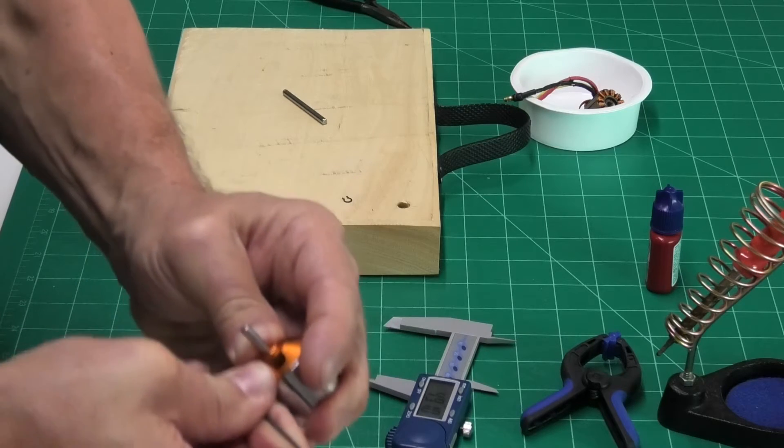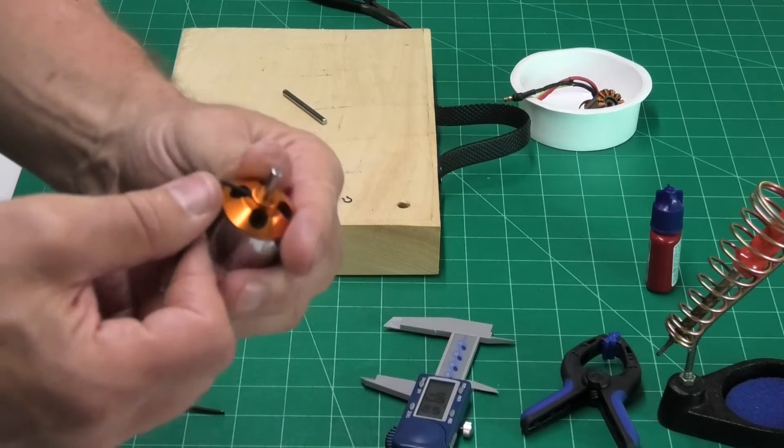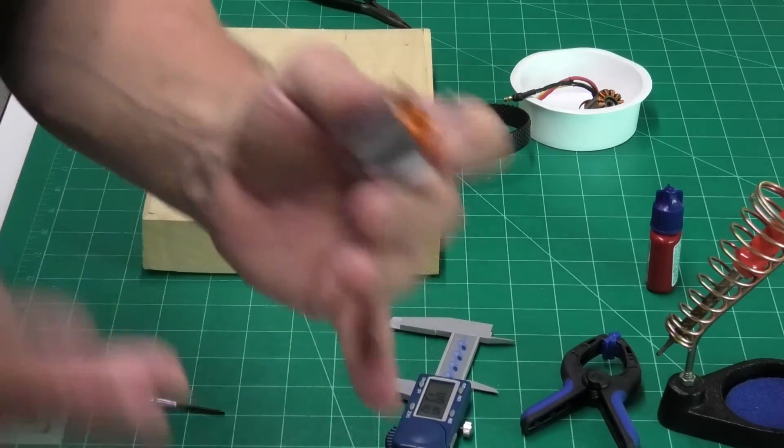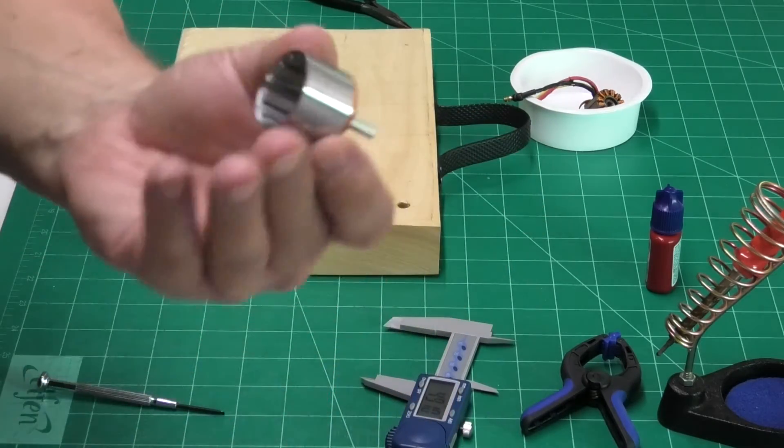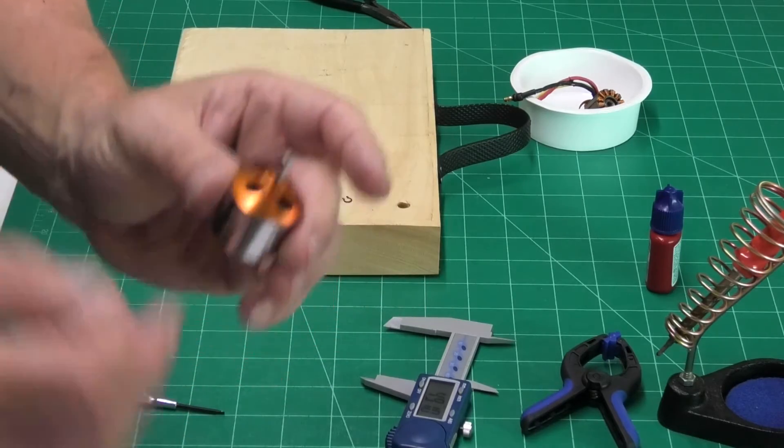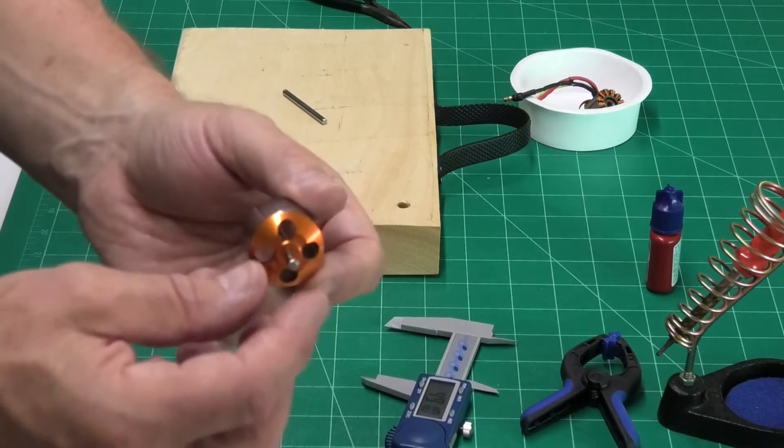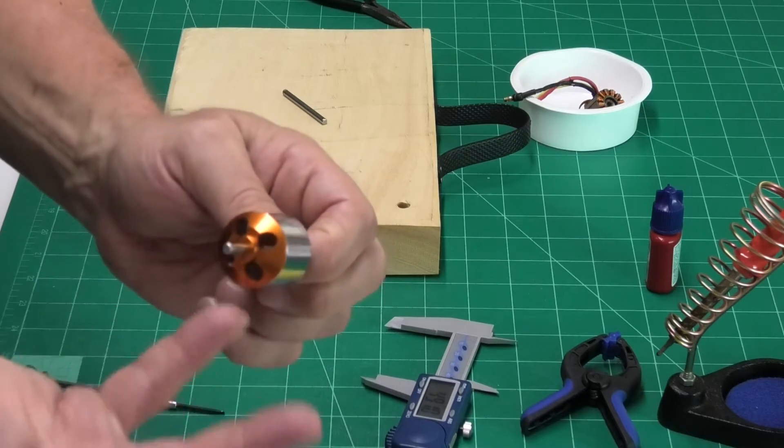And if I put any more pressure on it, it's just going to break the allen key, strip the screw, do some kind of damage and then we've just got a piece of scrap. So, what I'm going to do is apply some heat to this to break the thread lock.